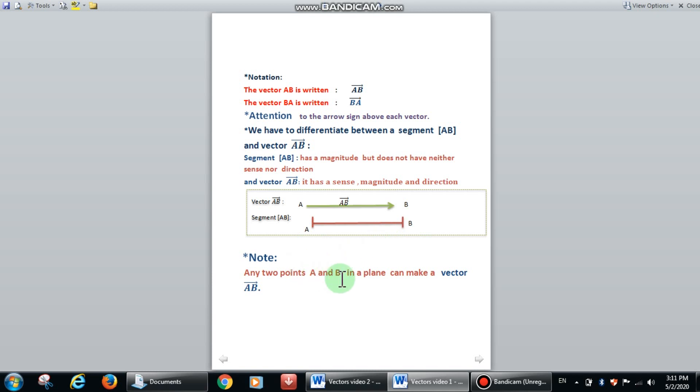Note that any two points, A and B, in a plane can make vector AB.